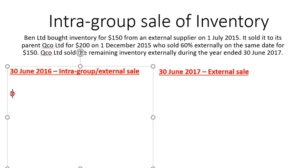The first thing we want to do is debit sales revenue by $200. When Ben Ltd sold inventory to Qco, they sold it for $200, so Ben Ltd would have recognised $200 of sales revenue. From the group's perspective, a sale hasn't actually been made — it's just a transfer between one entity to another. So we offset this revenue recognised by Ben Ltd by debiting it for $200.